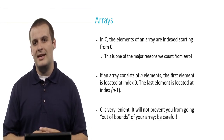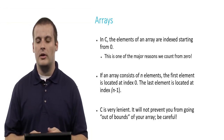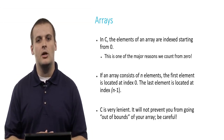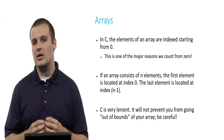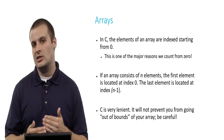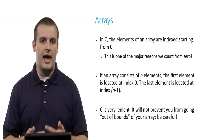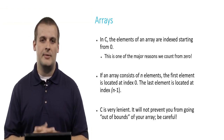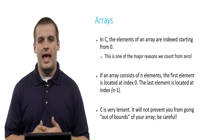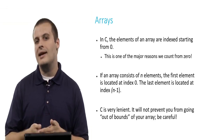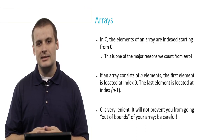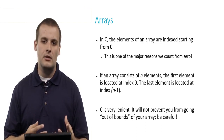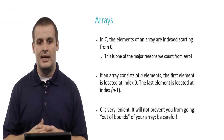In C, the elements of an array are indexed starting from 0, not from 1. And this is really important. This is why we in CS50 and why computer scientists frequently will count from 0 — it's because of C's array indexing, which always starts at 0. So if an array consists of n elements, the first element of that array is located at index 0, and the last element of the array is located at index n minus 1. So if our array has 50 elements, the first element is located at index 0 and the last element is located at index 49.